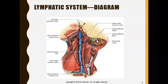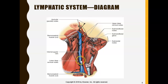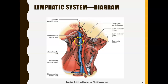Here we can see more lymph nodes. We see the submental, which is underneath the chin; the submandibular lymph nodes, which are right underneath the mandible; the parotid or preauricular lymph nodes, which are in front of the ear; and the jugular vein, with many lymph nodes associated close to the internal jugular vein. There are upper deep cervical nodes and lower deep cervical nodes.